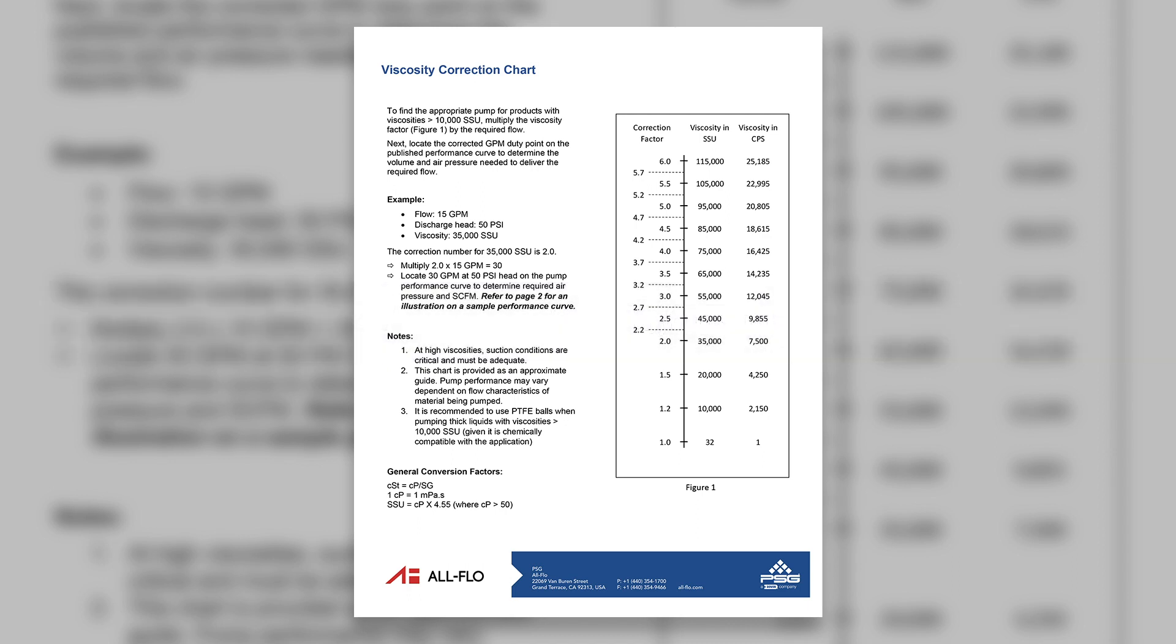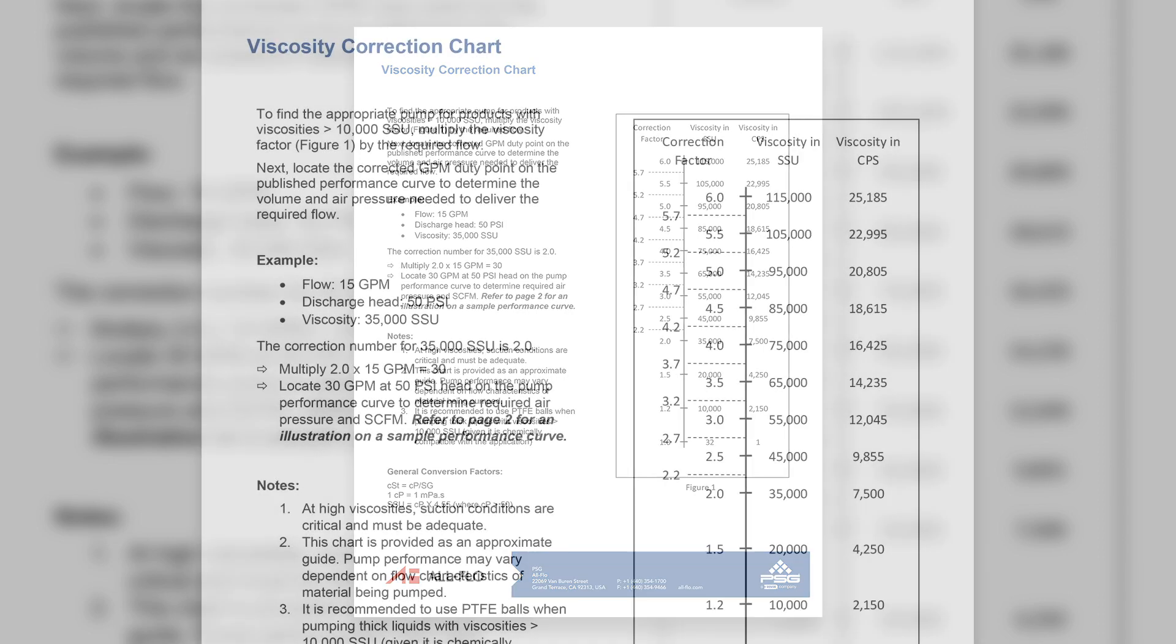As an example, let's say a manufacturing company is pumping a product that has a viscosity of 7500 centipoise at 50 PSI. Utilizing the AllFlow viscosity correction chart, identify the viscosity correction factor. In this instance, the viscosity correction factor for 7500 centipoise is 2.0.